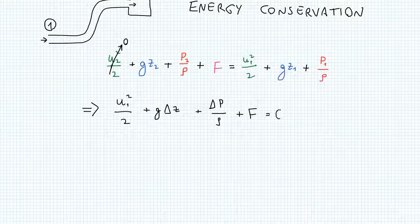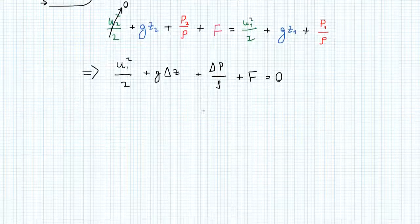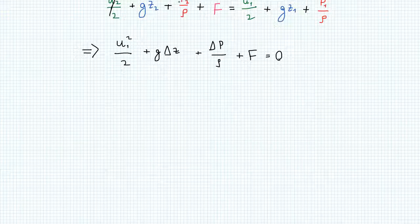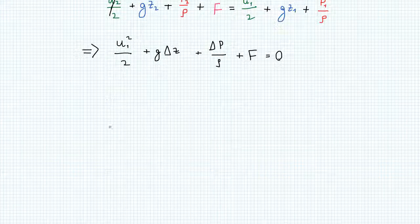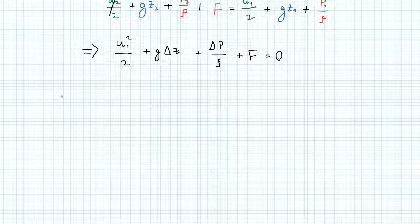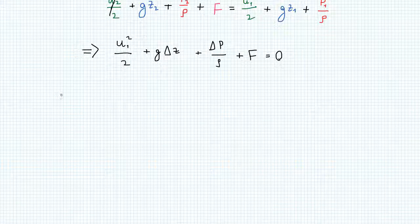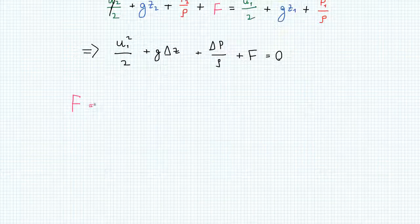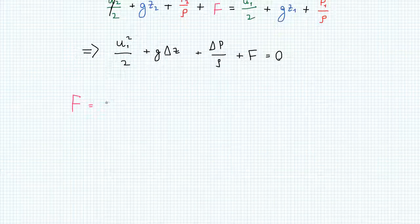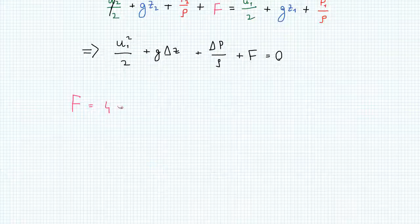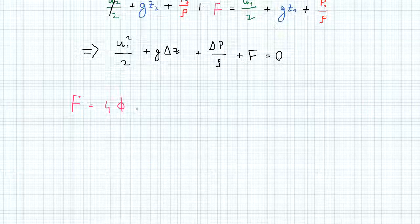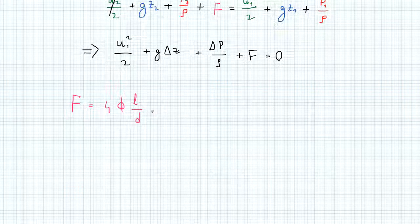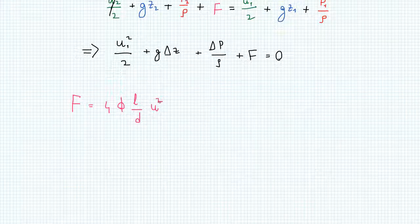Now, let's see what F actually is. F represents the energy dissipated per unit mass due to flow resistance in pipes. So it can be derived to be this equation. I'm not going to do the derivation here, but it can be found in various textbooks. F can be found to be 4 phi times the length of the pipe over the diameter of the pipe times the square of the velocity of the fluid.